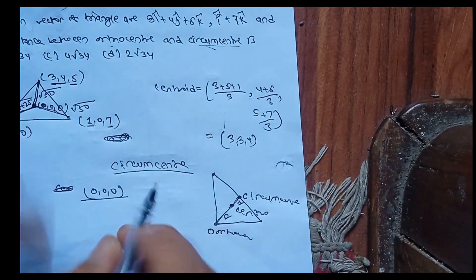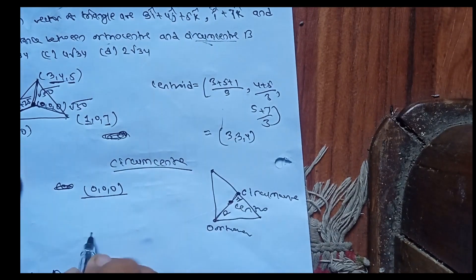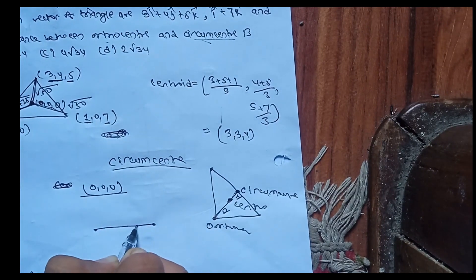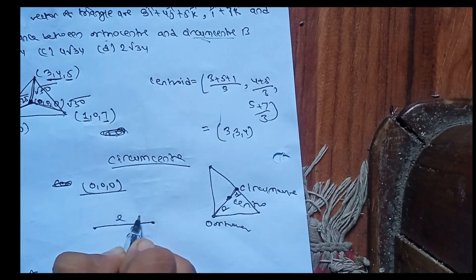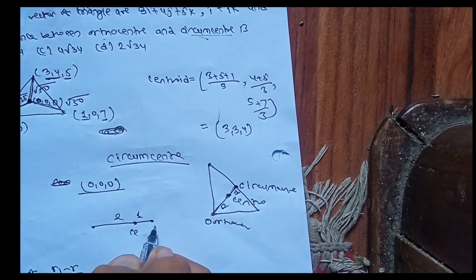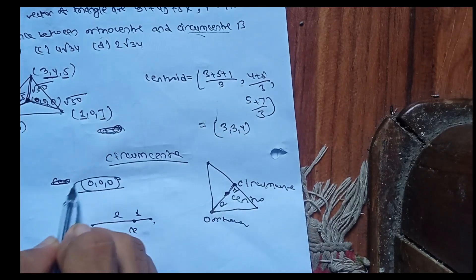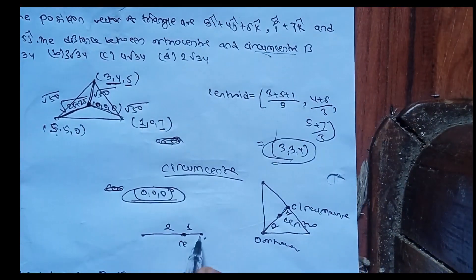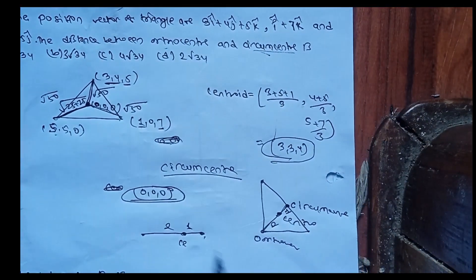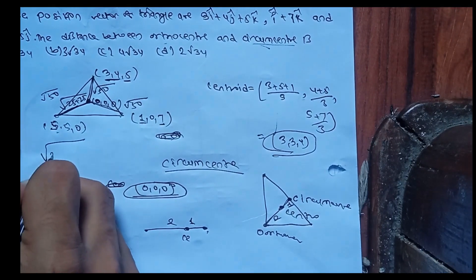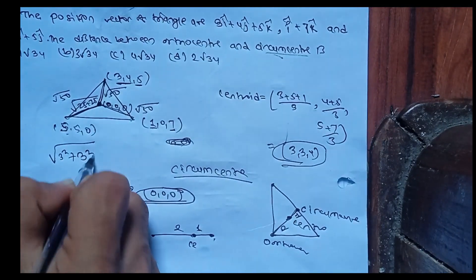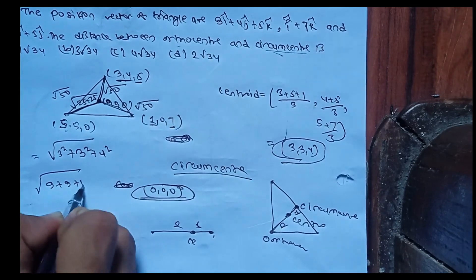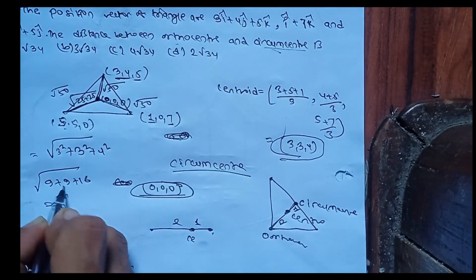The orthocentre and circumcentre are related in ratio 1:2. The circumcentre distance calculation: sqrt(9 + 9 + ... + 34) gives the final distance answer for the triangle problem.